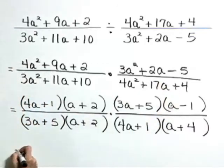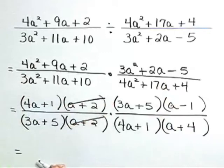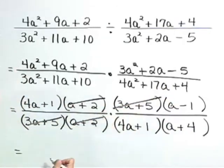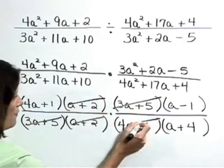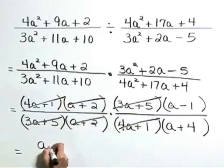So we've got things factored. That's the hard part. Here comes the fun part. Let's cancel our common factors. We've got a plus 2 in both the numerator and denominator. We have 3a plus 5 in both and 4a plus 1 in both. This leaves us with the reduced form, also called lowest terms, a minus 1 over a plus 4.